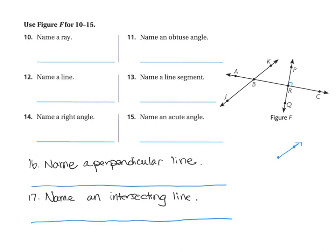It only says to name one, so I'm going to pick one — I'm going to say Ray BA. When we write our answers for rays, the endpoint comes first. So I'll use the arrow symbol for a ray with no endpoints on the symbol, and write B, A. I can't write A, B because it starts at point B and goes to A. So there's my answer for name a ray: Ray BA.